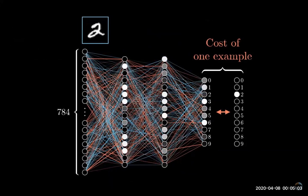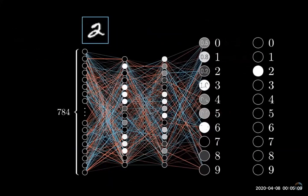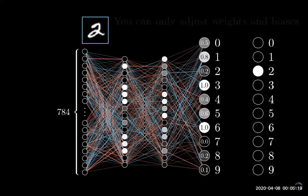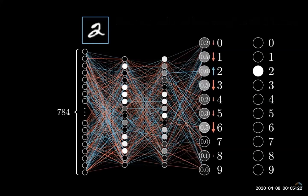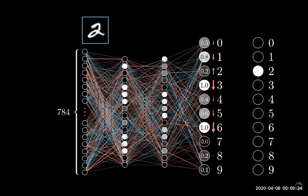Let's say we're at a point where the network is not well trained yet. We can't directly change those activations, we only have influence on the weights and biases. But it is helpful to keep track of which adjustments we wish should take place to that output layer. Since we want it to classify the image as a two, we want that third value to get nudged up while all of the others get nudged down.